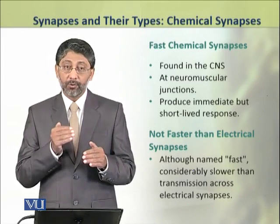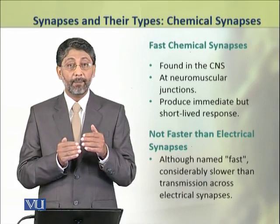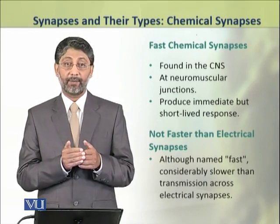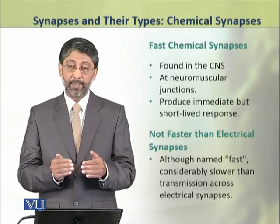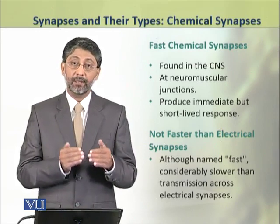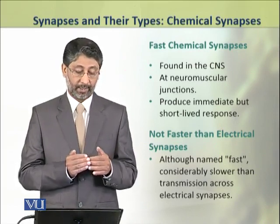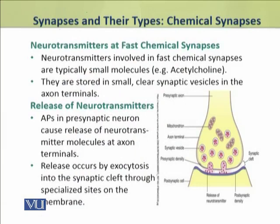The neurotransmitters involved in fast chemical synapses are typically small molecules. For example, acetylcholine. They are stored in small clear synaptic vesicles in the axon terminals.